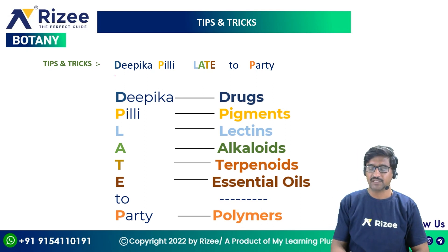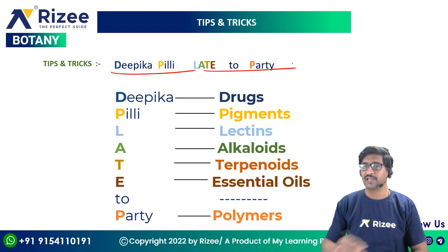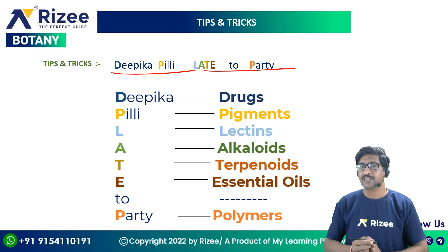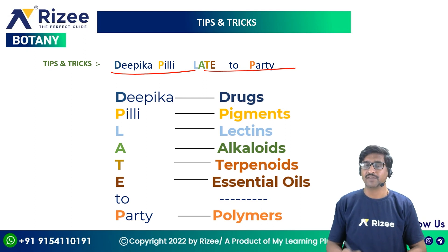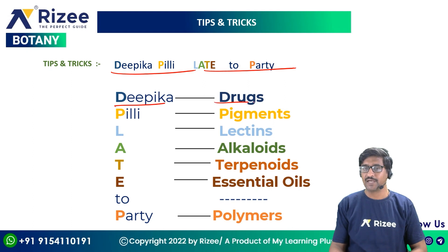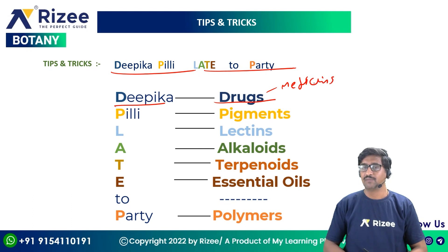Here is a simple tip and trick: 'DP ka pilli late to part.' In this mnemonic, 'DP ka' — D stands for Drugs, which are used in medicine.